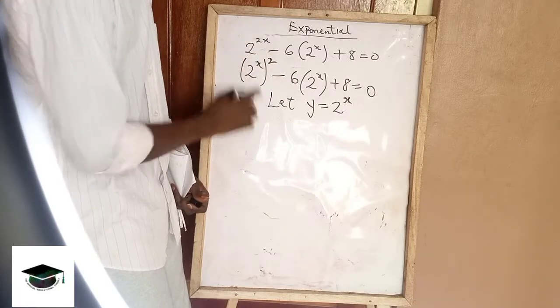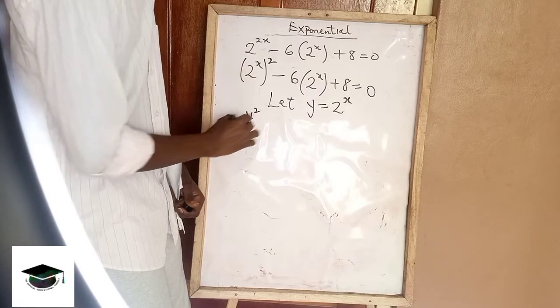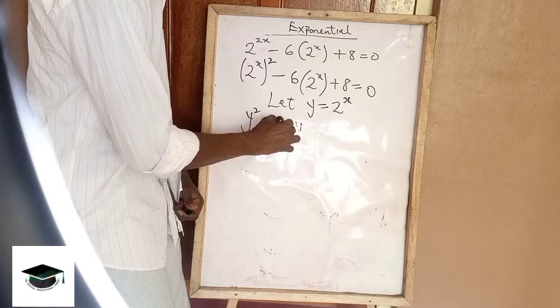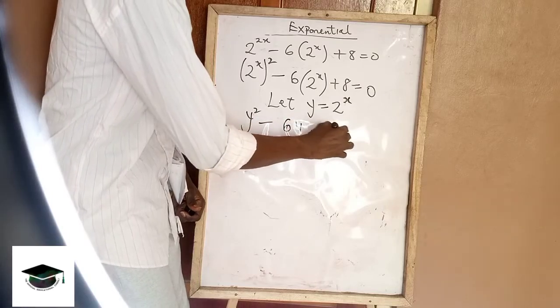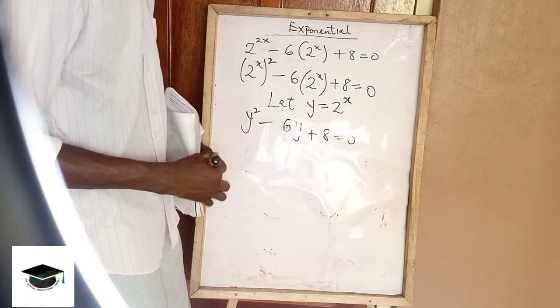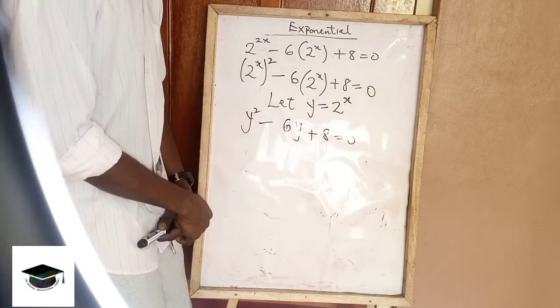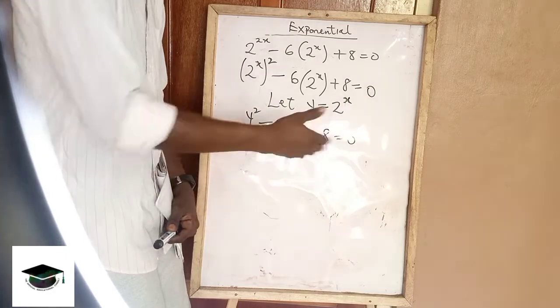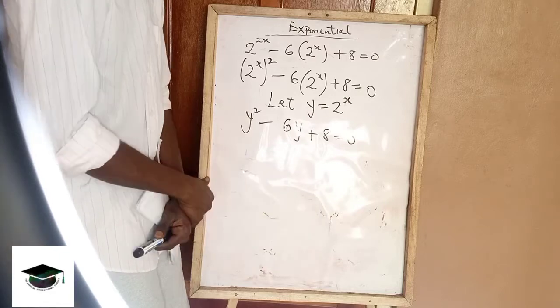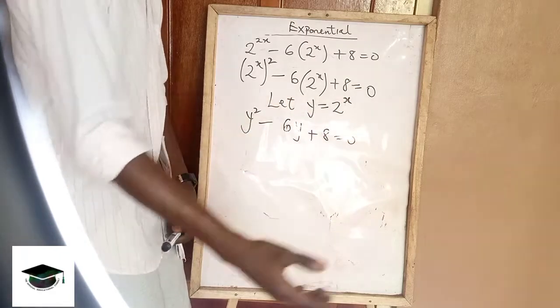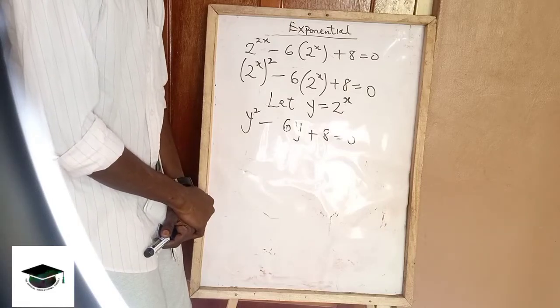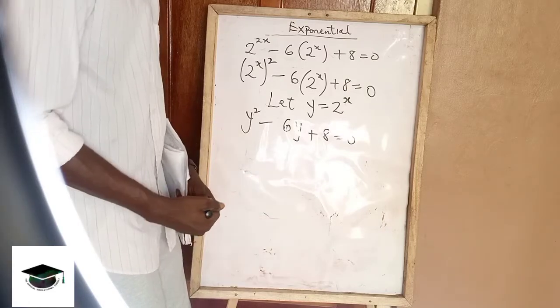And that's going to be instead of 2 raised to power x, you write y raised to power 2, minus 6y plus 8 equals to 0. And then you can proceed to solve this using quadratic equation. Using factorization, or you use complete square method, or you use the quadratic formula, which is also called the almighty formula. So it depends on anyone you are using.